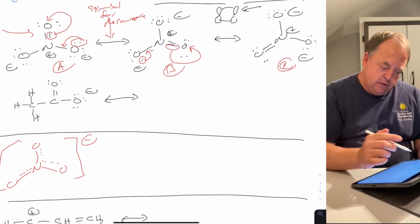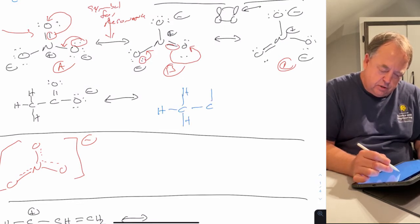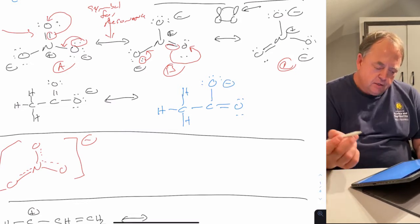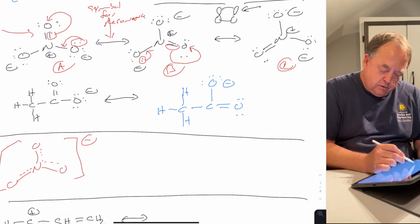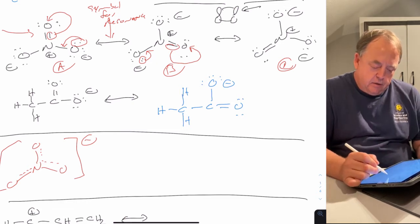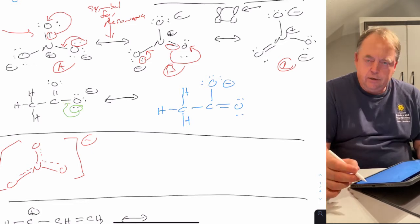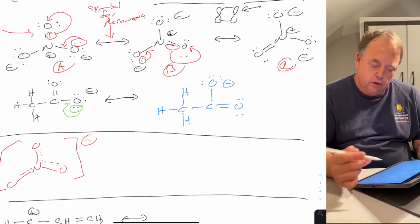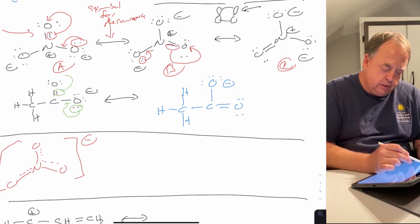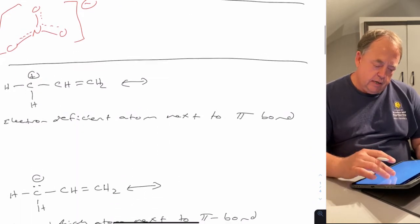For acetate, the other resonance structure has the double bond to the other oxygen, with three lone pairs and the negative charge on the top oxygen. To draw the arrows: the oxygen on the right has three lone pairs in the left structure and two in the right — that third lone pair was used to create a double bond. The oxygen on top gained a third lone pair from the pi bond electrons becoming a lone pair.